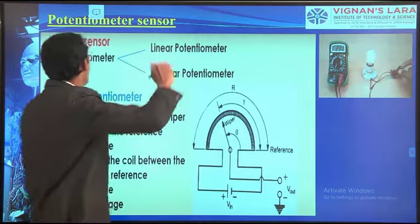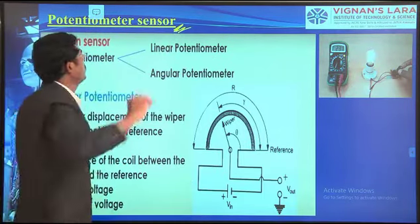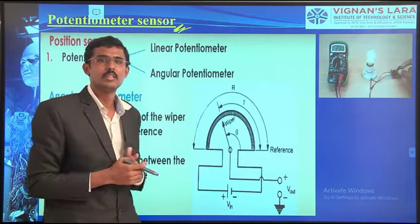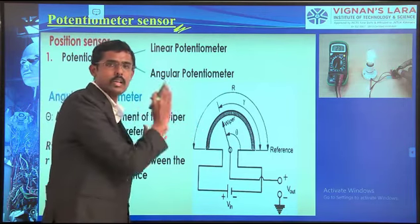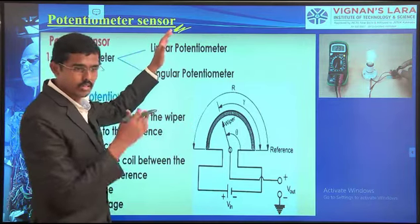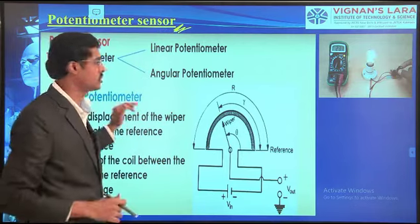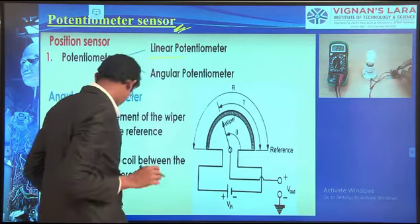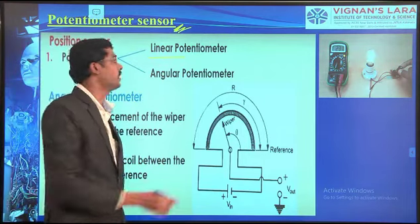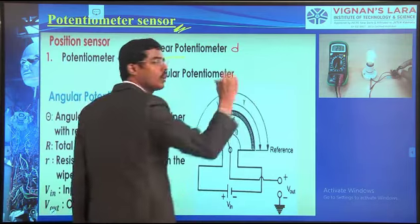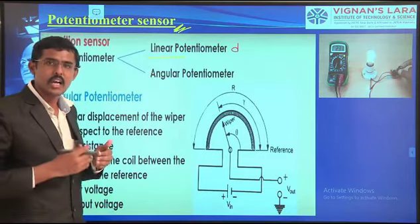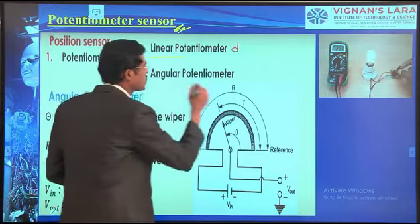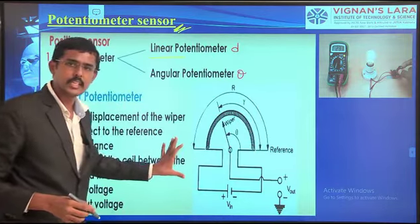The first position sensor we look at is the potentiometer. We have classified sensors into contact type and non-contact type. Now entering the first type: the potentiometer. We can understand whether it may be a linear potentiometer — denoted as small d — or an angular potentiometer. When it is angular, we measure angular displacement theta — how much angular displacement, how far it has moved.